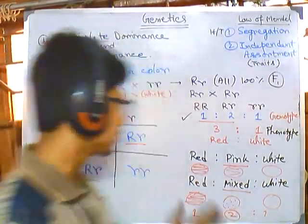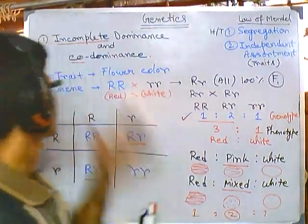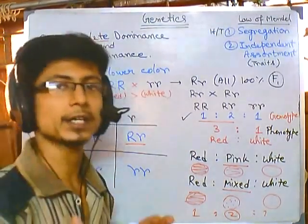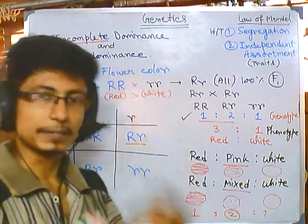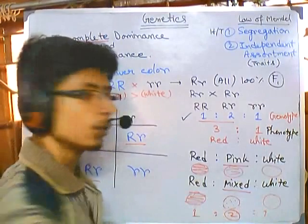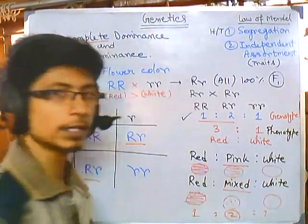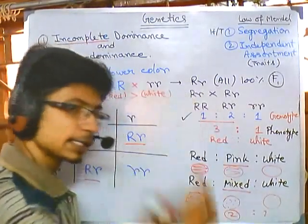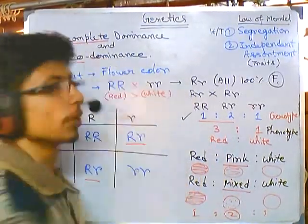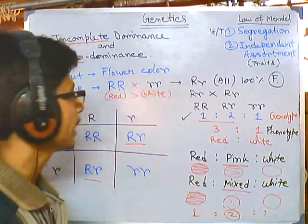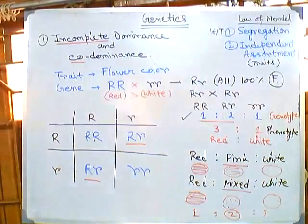The genotypic ratio and phenotypic ratio are the same in both incomplete dominance and codominance. The inheritance pattern of genes is similar in both cases, but the effect is different. In incomplete dominance, blending occurs and neither allele is dominant, giving a pink flower. In codominance, both alleles are self-dominant, giving a white flower with red spots. I hope this helps you understand this concept. Thank you.